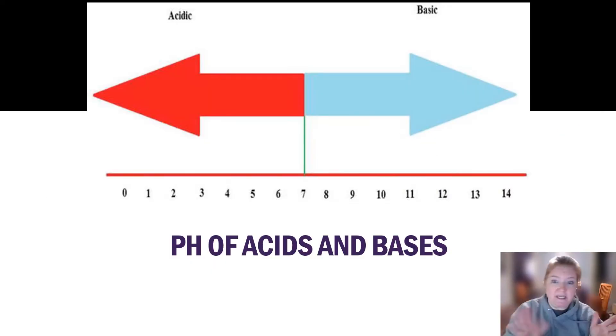We measure pH on a scale from 0 to 14, 7 being neutral, 14 being the most basic or alkaline, and 0 being the most acidic.